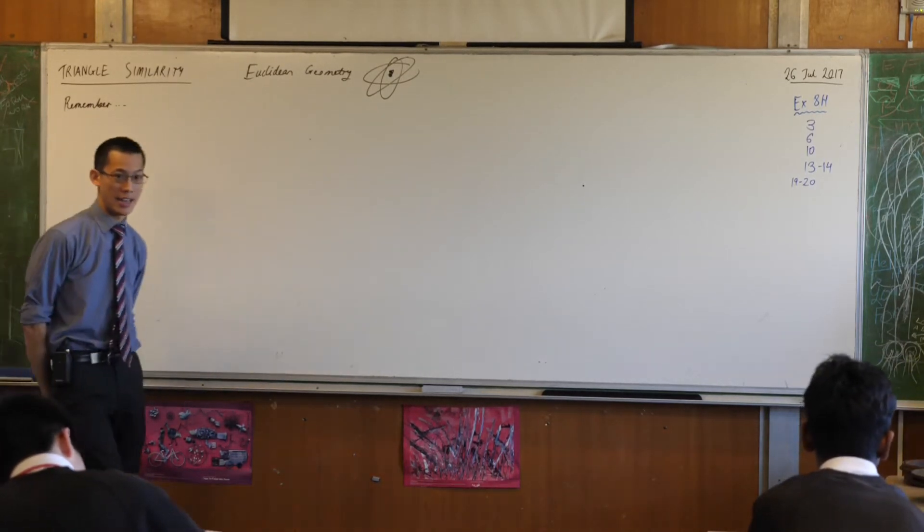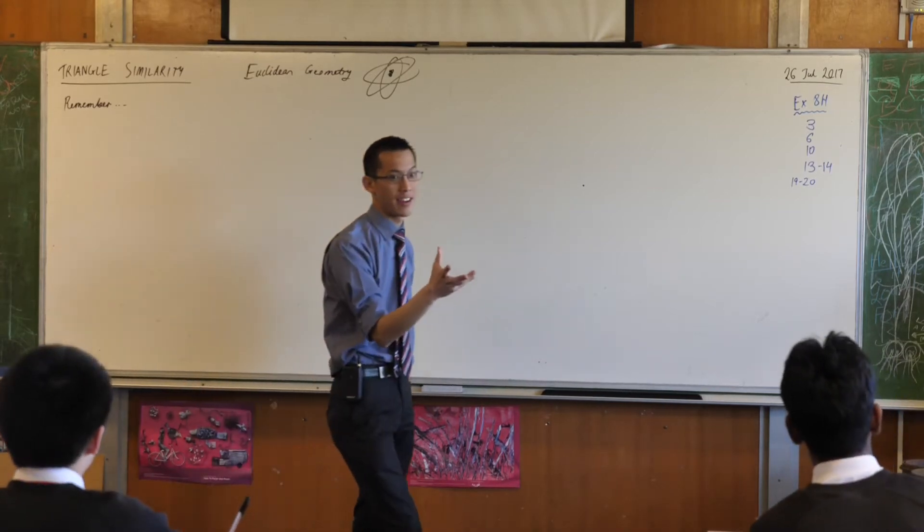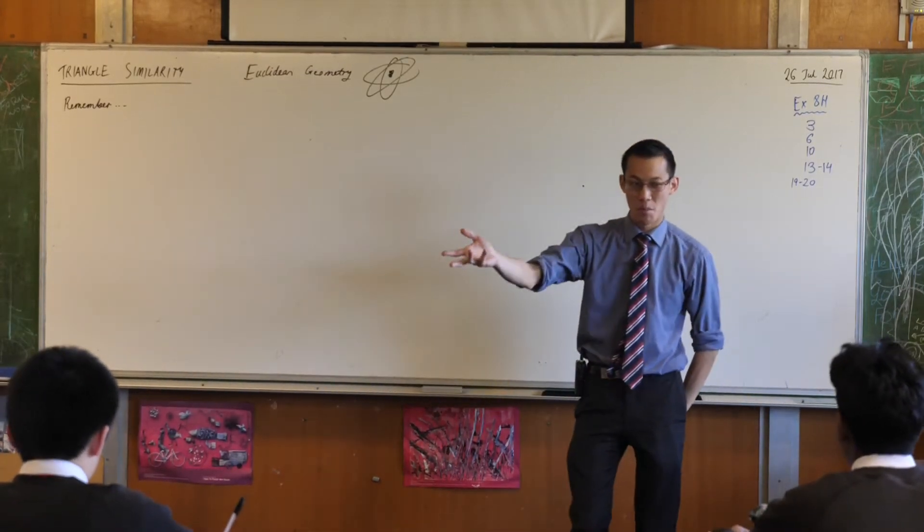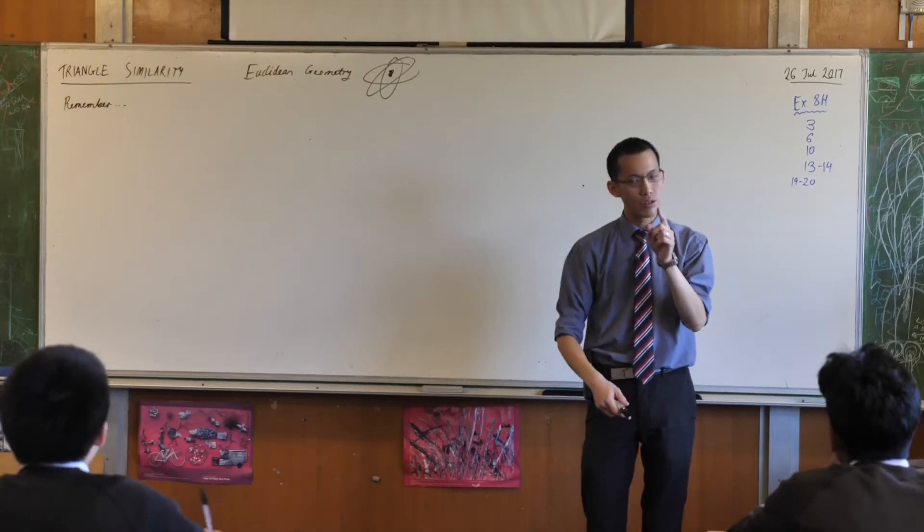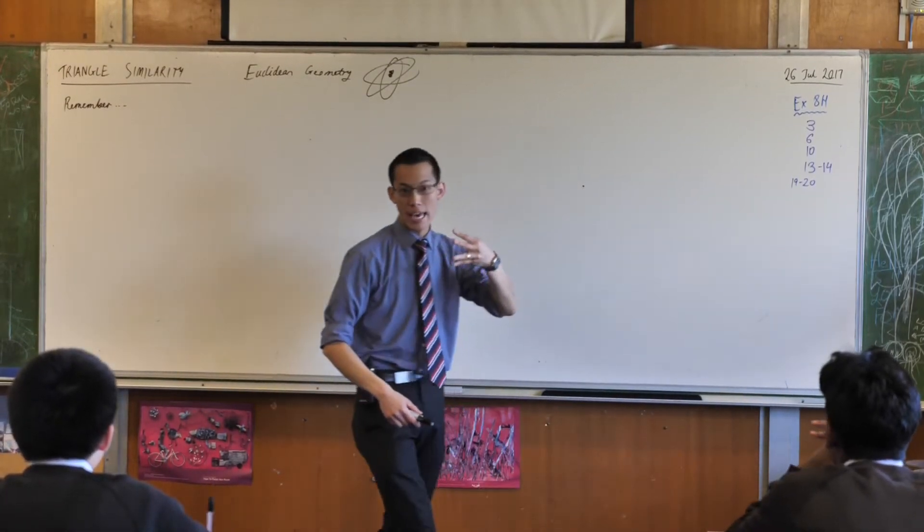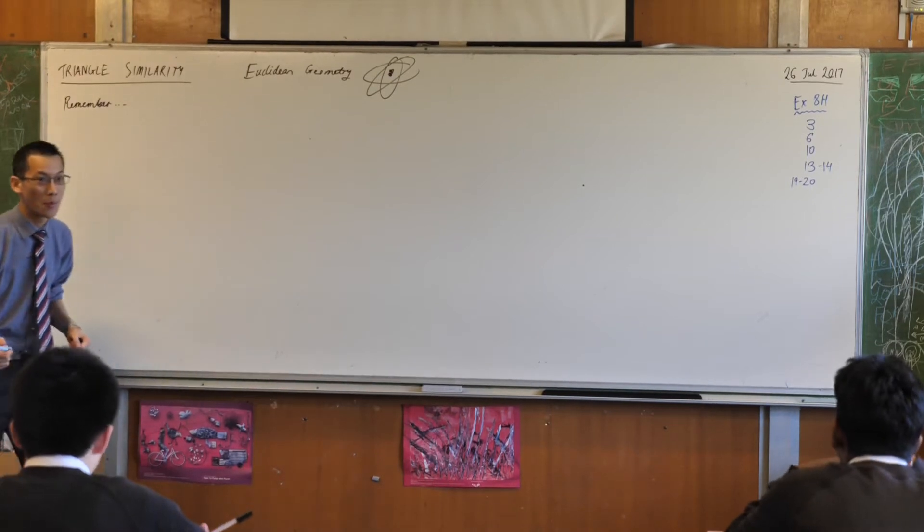We're having a look at similarity today. The best way to understand similarity, which is traditionally a quite hard to remember part of Euclidean geometry, is to think back to congruence. There were four tests for congruence. Do you remember what they were?